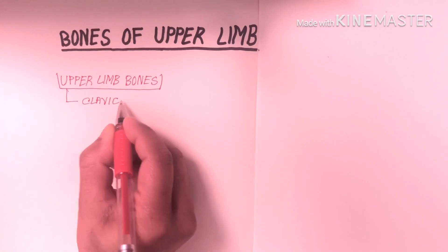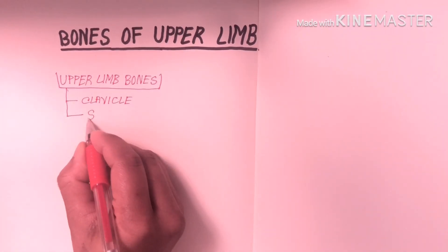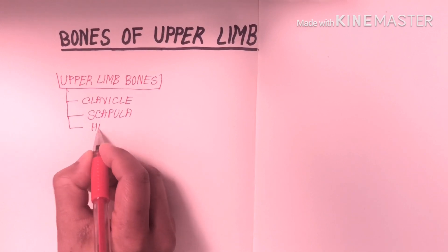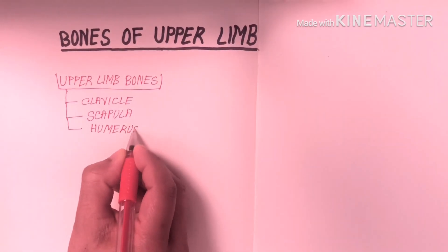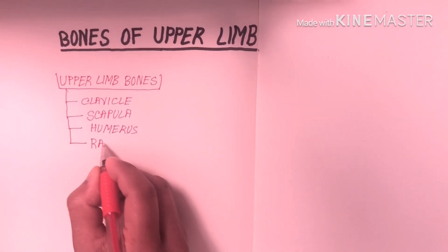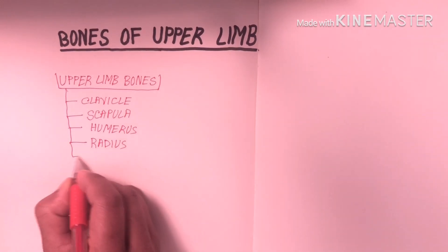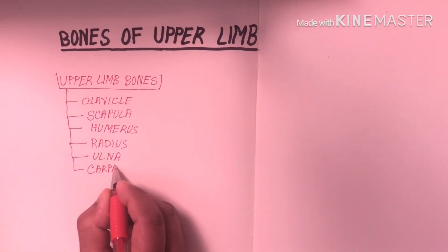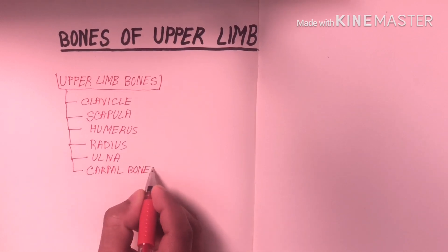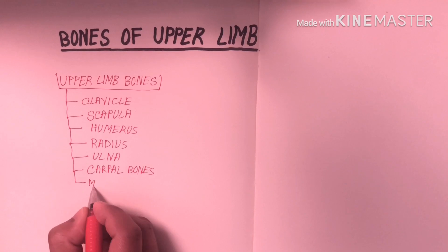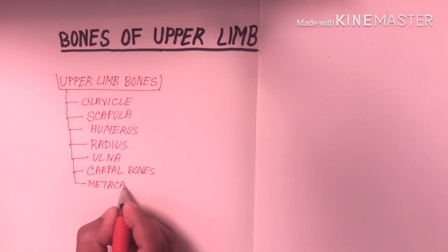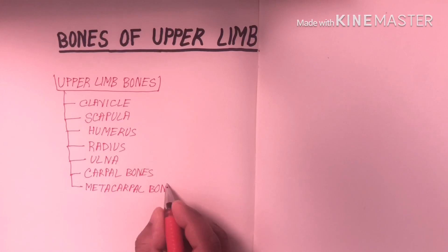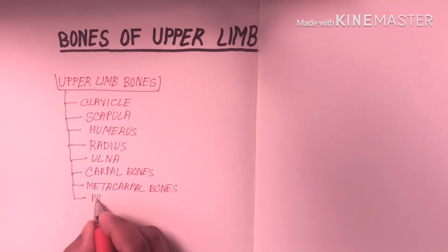Clavicle, scapula, then humerus, radius, ulna. Then we have eight carpal bones, each with different names. Then metacarpal bones — we have five metacarpal bones. Then finally phalanges.